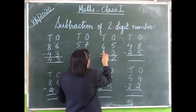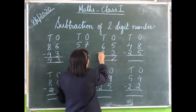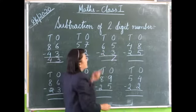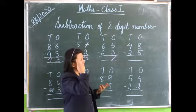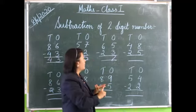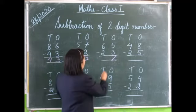Six minus two. Six on the head, two in our fingers. We count backwards: six, five, four.